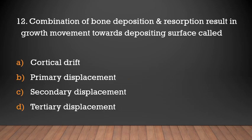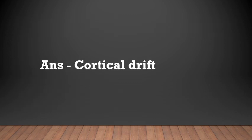Combination of bone deposition and resorption resulting in growth movement towards the depositing surface is called: cortical drift, primary displacement, secondary displacement, or tertiary displacement. Answer: Cortical drift.